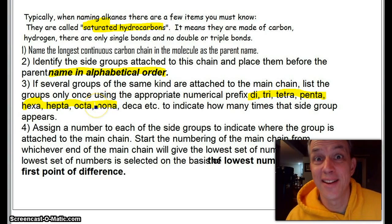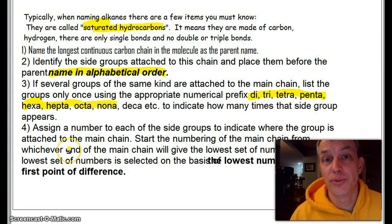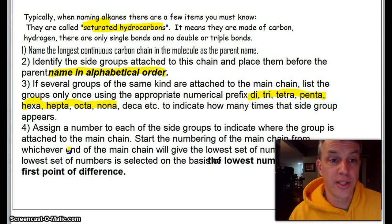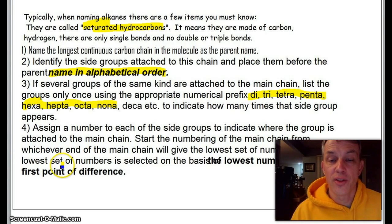Then finally, we basically assign a number to the groups that are coming off. To get that number, we count the carbons in the chain.